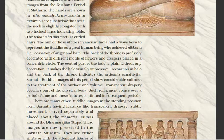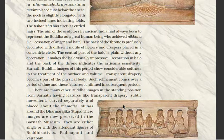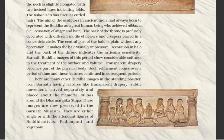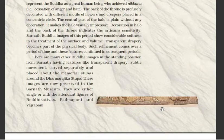Such refinements come over a period of time and continue in subsequent periods. There are many other Buddha images in standing positions from Sarnath, featuring transparent drapery, carved separately and placed above the memorial stupas around the Dharmarajika stupa. These images are preserved in the Sarnath museum, either single or with attendant figures of the Bodhisattvas Padampani and Vajrapani.